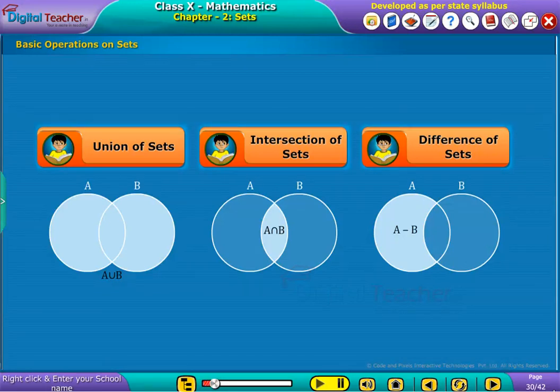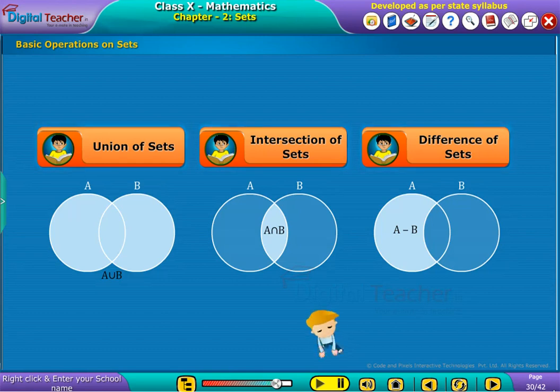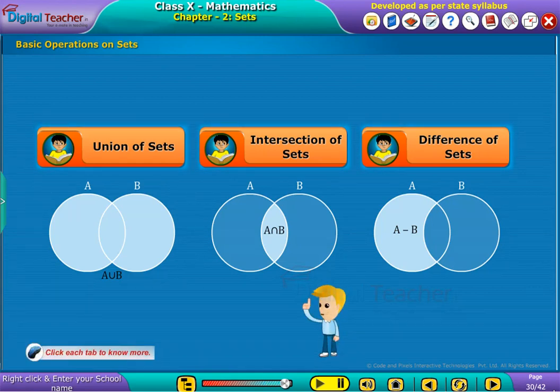Basic operations on sets. The basic operations on sets are classified into three types. They are union of sets, intersection of sets, and difference of sets. Click each tab to know more.